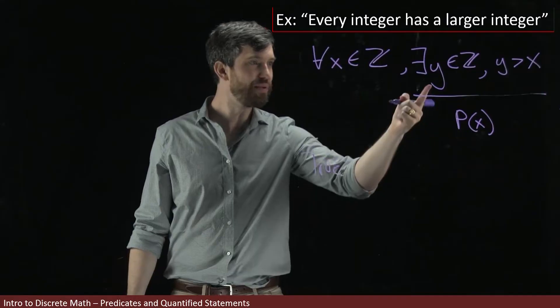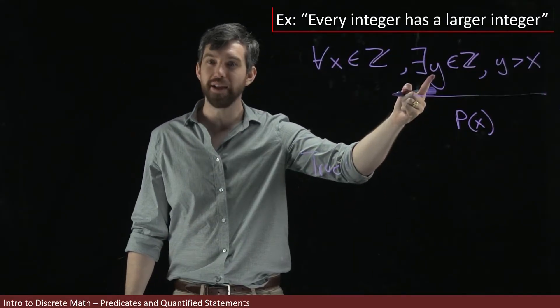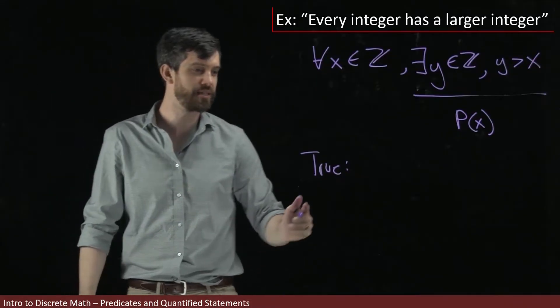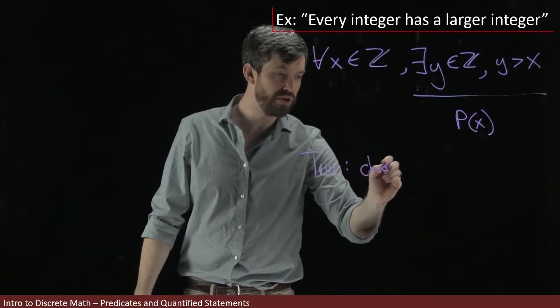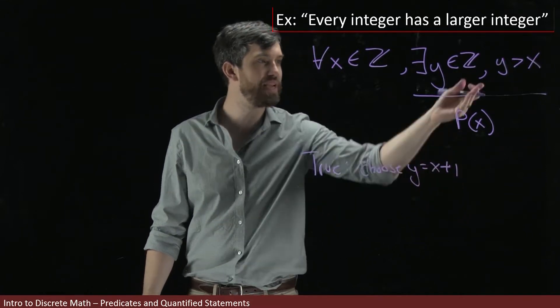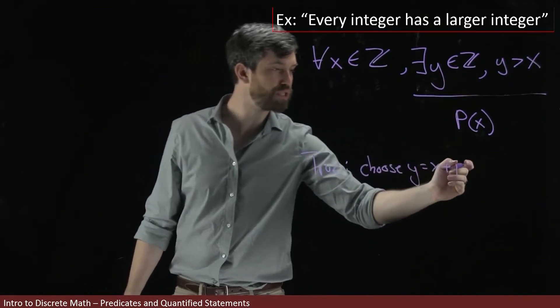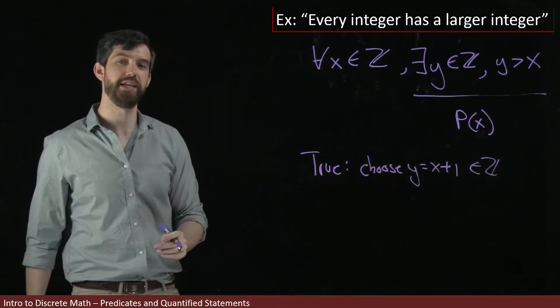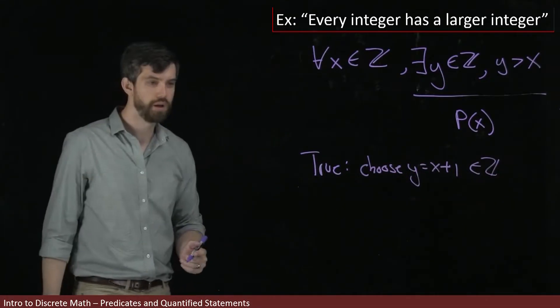So because I'm claiming there exists a y, to be true, I have to tell you what the y is. I have to show you this is the one that exists. So you could just choose that your y was always equal to x plus one. And because we're in the integers, x plus one is always going to be in the integers if x is going to be in the integers.